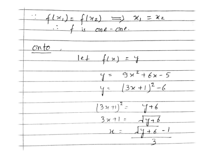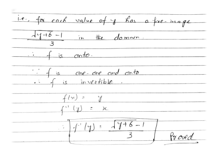Moving to the second part, onto. Onto means for every y there must exist some x. Let f(x) = y, so y = 9x² + 6x − 5. We already converted this to a perfect square: y = (3x+1)² − 6. Solving for x gives x = (√(y+6) − 1)/3. So for each value of y, there is a pre-image x = (√(y+6) − 1)/3 in the domain. Therefore by the definition of onto, f is onto. Since f is one-one and onto, f is invertible.